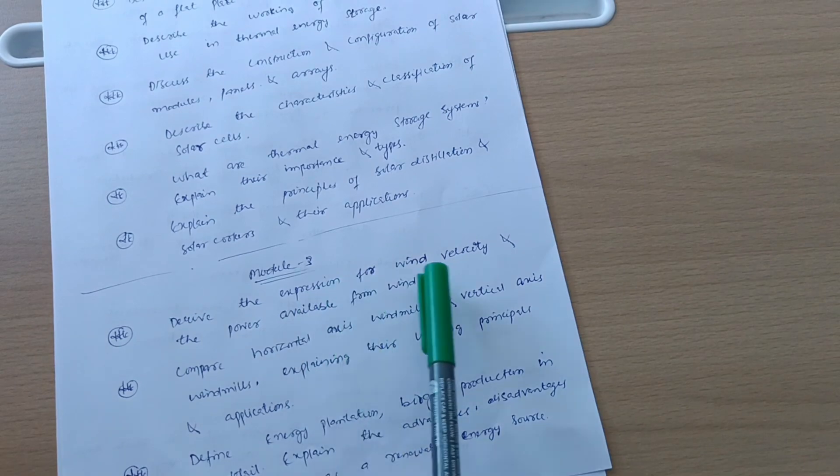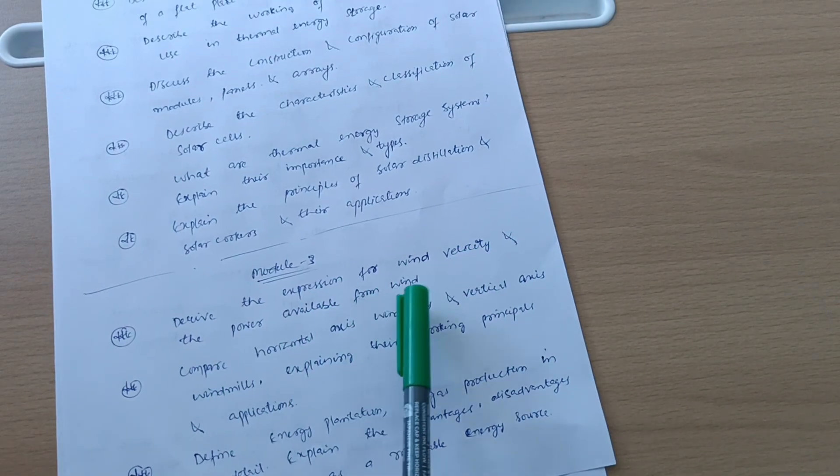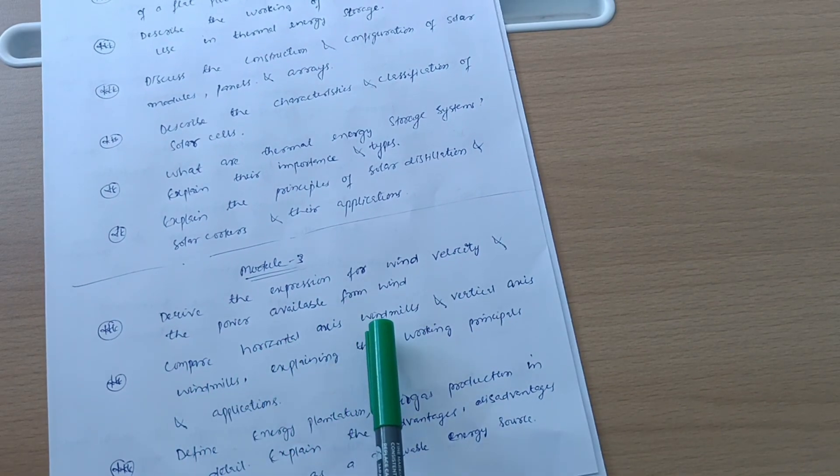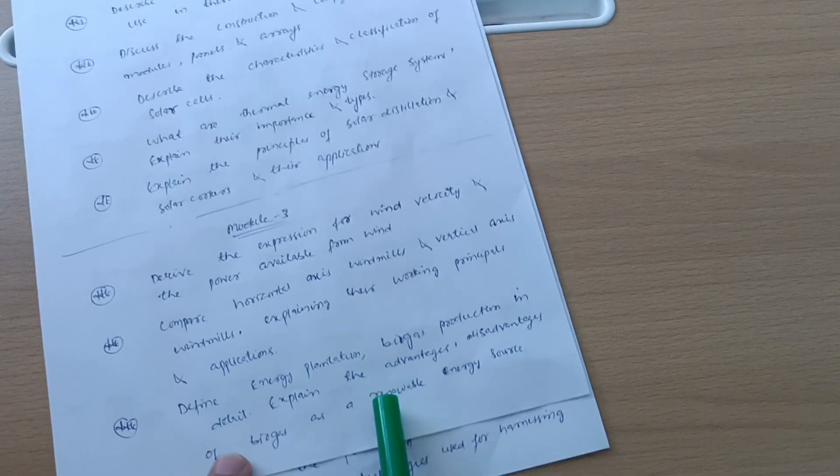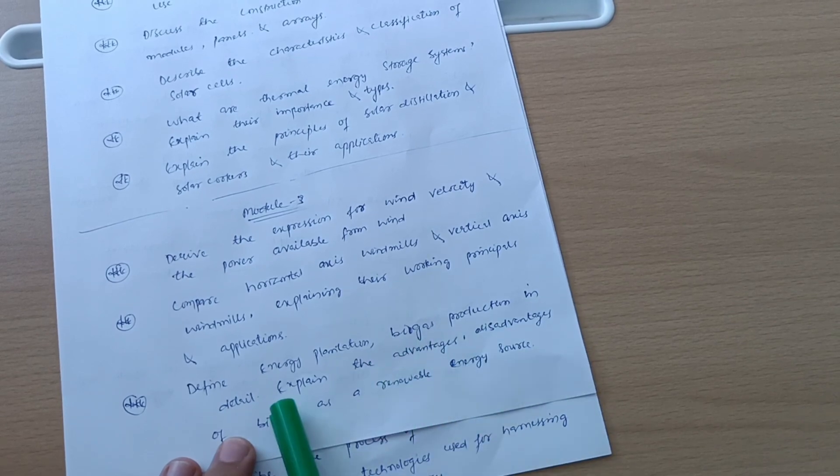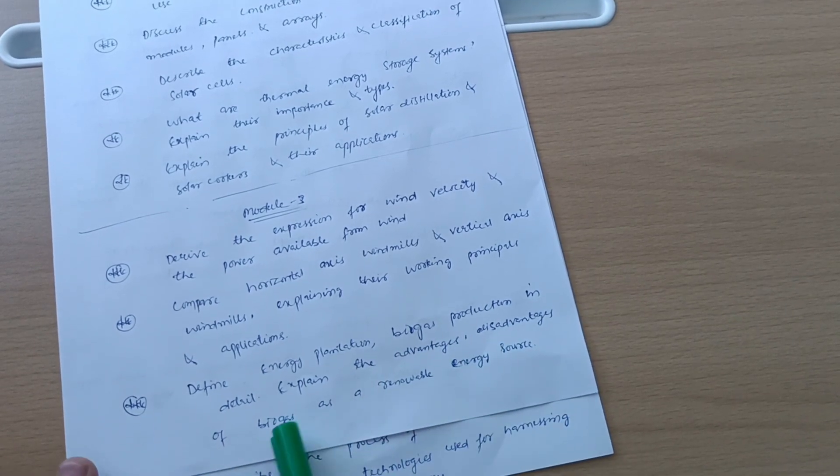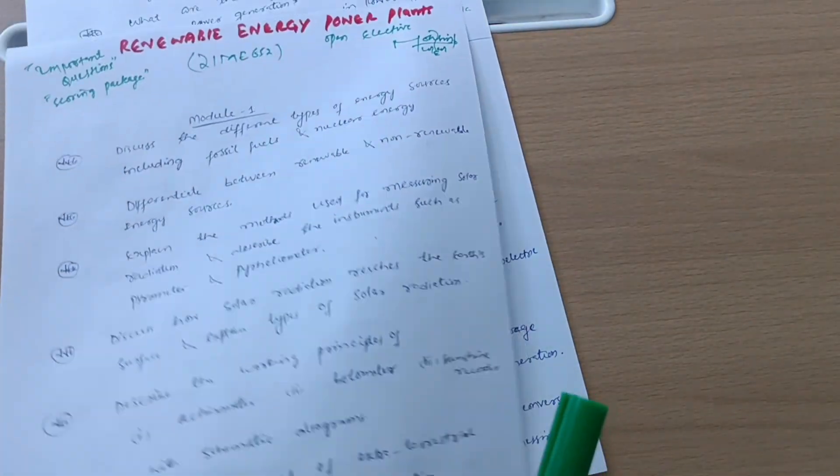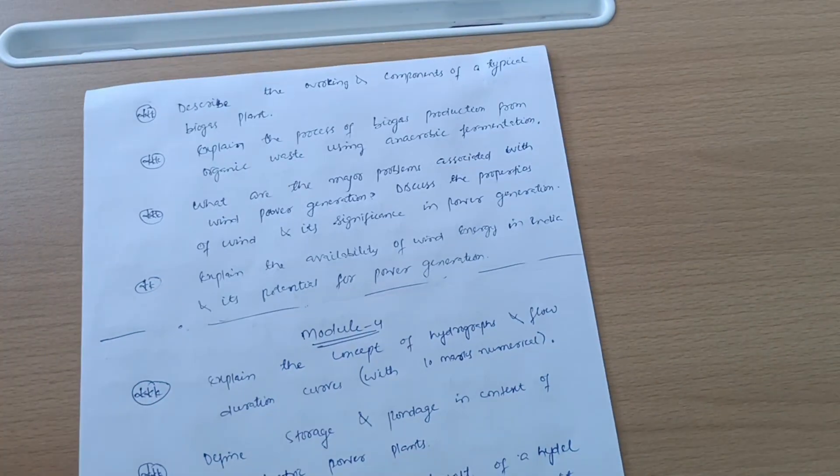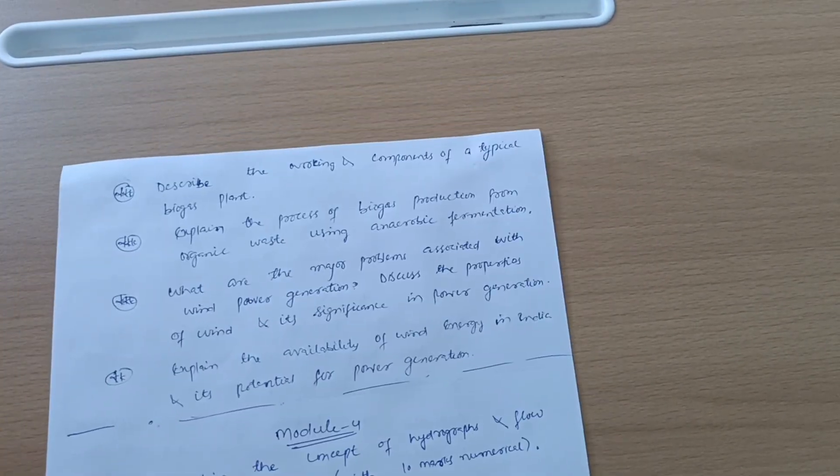Model Third: Derive the expression for wind velocity and the power available from wind. Compare horizontal axis windmills and vertical axis windmills explaining their working principles and applications. Define energy plantation, biogas production in detail. Explain the advantages and disadvantages of biogas as a renewable energy source.